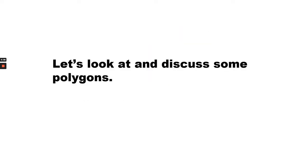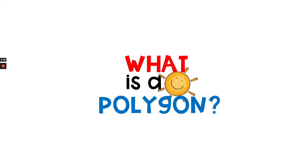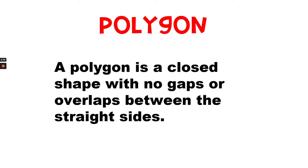Let's look at and discuss some polygons. So, what is a polygon? A polygon is a closed shape with no gaps or overlaps between the straight sides.